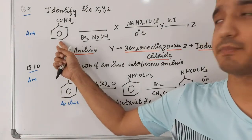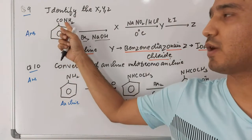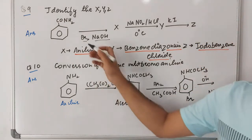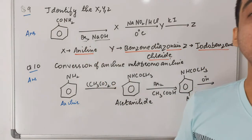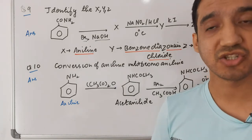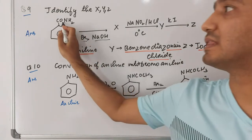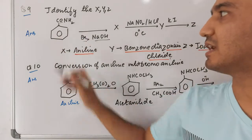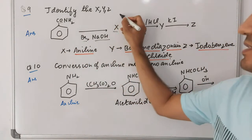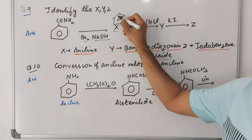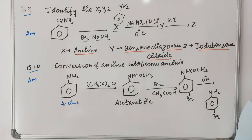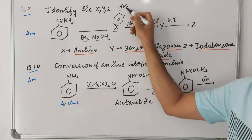Question nine: identify X, Y, and Z. Given compound benzene with CO·NH₂ (benzamide) is reacted with Br₂ and NaOH — this is the Hofmann bromamide degradation reaction. In this reaction, the CO group is removed, and X formed is aniline.